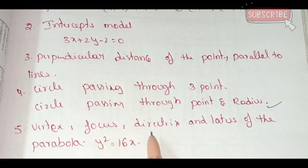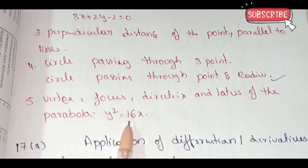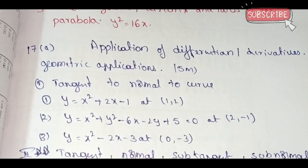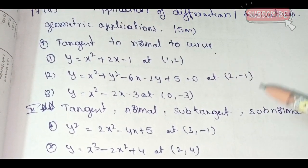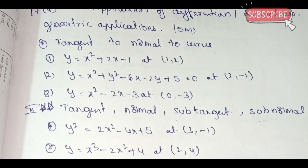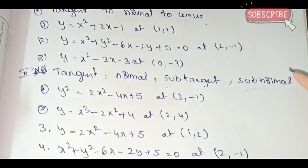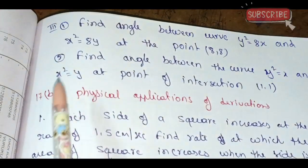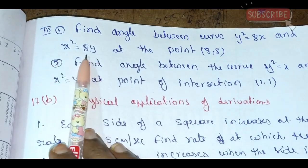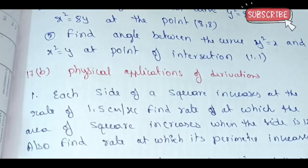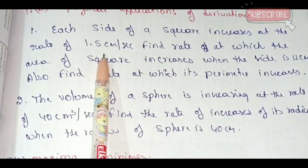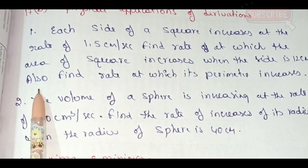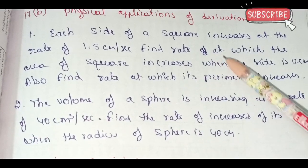Next: vertex, focus, directrix, and latus rectum of parabola — y squared equals 16x, find out. Question 17 covers applications of differentiation and derivatives: tangent and normal to a curve, sub-tangent and sub-normal. Also, find the angle between curves y squared equals 8x and x squared equals 8y at the point (8,8). Physical application: each side of a square increases at 1.5 cm per second — find the rate at which the area increases when side is 12 cm, and also the rate at which the perimeter increases.